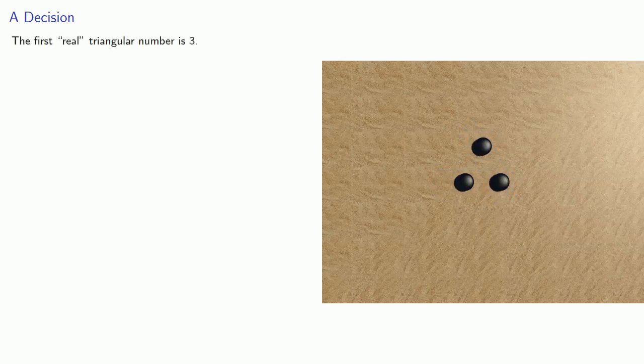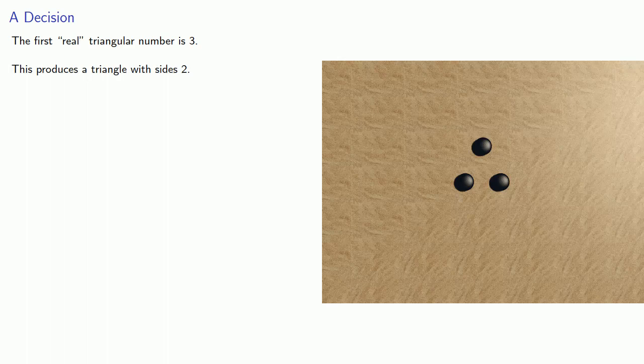Let's see. If I have two, it's not clear how I could make this into a triangle with equal sides. But if I go up to three, I can put these into a triangular array where each of my three sides has length two. And so we might say the first real triangular number is three, and this produces a triangle with sides two.